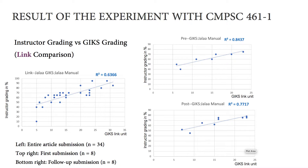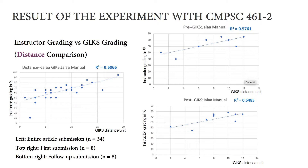89% correlation is received for the last of the multiple submissions. This slide shows how close GICS grading is when the distance is compared to the instructor's. The left graph shows that, with 34 submissions, when we do the links comparison, R-squared is 0.5066.